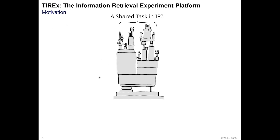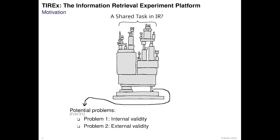Here we see an example of a shared task that is not robust because there is a very fragile component, and if this component fails or is not true, then everything crashes together. There are of course many ideas in the research community about what that component might be. For example, Norbert Fuhr mentioned mainly two problems in his SIG-IR 2021 keynote: problem one with internal validity and problem two with external validity. Nowadays there might be a third problem — we can't really do blinded experimentation with large language models that have seen much of the training data available on the web. Let me give you some more details on those three problems and how TREX can address them.